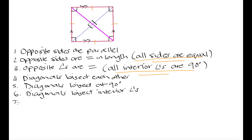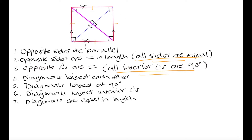Another special thing about the square is that our diagonals are congruent — our diagonals are equal in length. This is a property that we actually saw in rectangles, where the diagonals were equal in length. When you think about a square you can either think of it as a rhombus with its interior angles at 90 degrees, or as a rectangle that has all sides of equal length. Let's take a moment to prove that in a square the diagonals are going to be congruent.